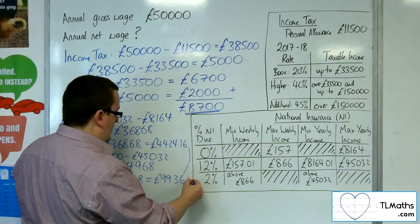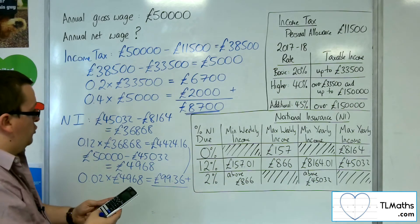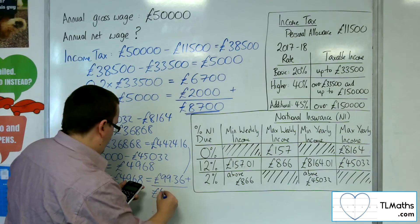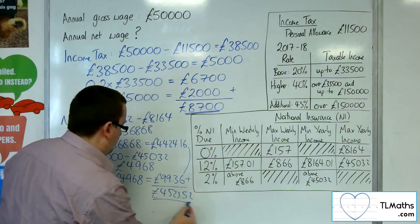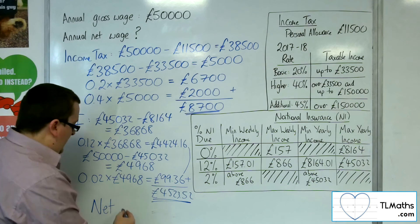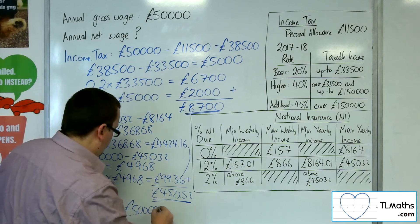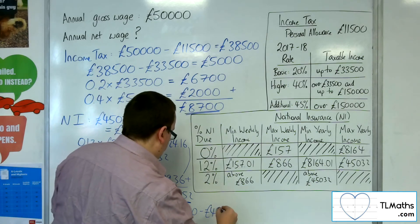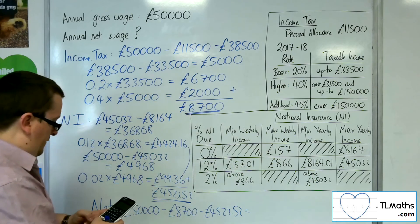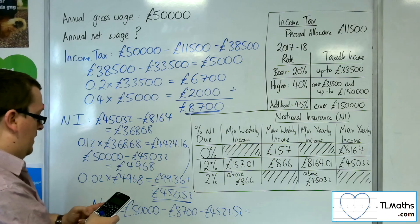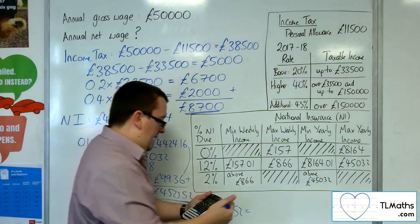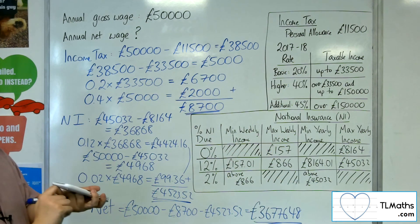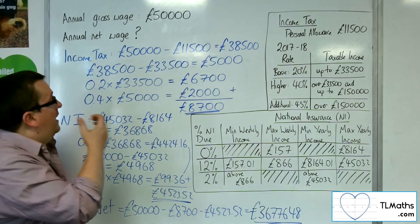So these two get added together, because that would be my total National Insurance contribution — £4,523.52. So my net annual wage is £50,000, take away the income tax, take away the National Insurance. So £50,000 take away £8,700 take away £4,523.52 gets me £36,776.48. That is my net annual wage after deductions.